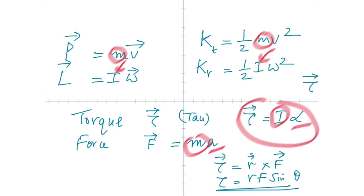I had a puncture one time, driving in India. I had forgotten to take the tire rod. Somebody stopped and helped me with his truck's tire rod. Later I had to remove the spare tire, but my smaller car tire rod couldn't generate enough torque — because the length of the handle is smaller, so the torque is not enough. I had to hammer it to get the bolt loose.